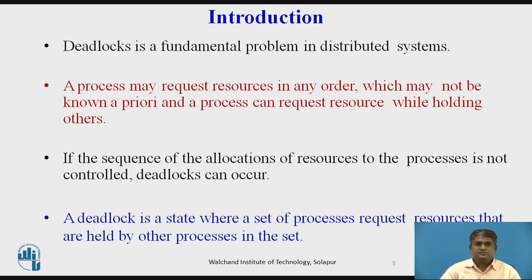A distributed system is a network of sites that exchange information with each other by message passing. A site consists of computing and storage facilities, an interface to local users, and a communication network.